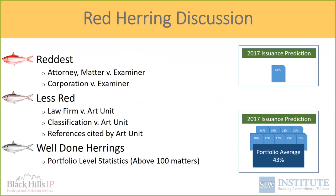When I see advertisements about examiner and PAIR data, I divide them into red herring classifications. At the basic level, when you're looking at a single examiner — your matter versus an examiner, a corporation versus an examiner — there's much ado about nothing in those categories, because of the contextual aspects cited earlier. A little less red is when you start to run law firms versus art unit, look at CPC, IPC, or U.S. classification codes against the art unit, and look at the references cited. The best area in statistical output right now is both examiner statistics and PAIR statistics done at a portfolio level above 100 matters.